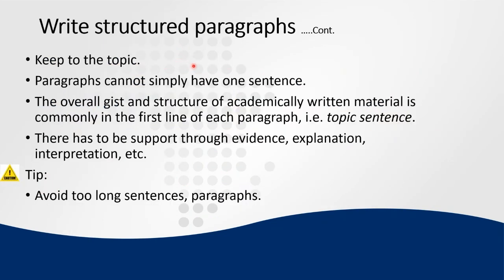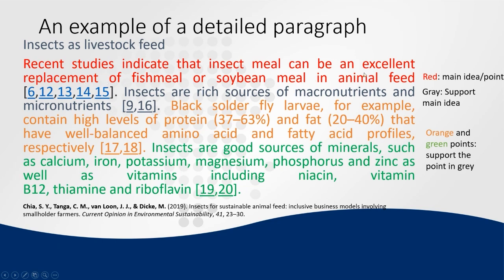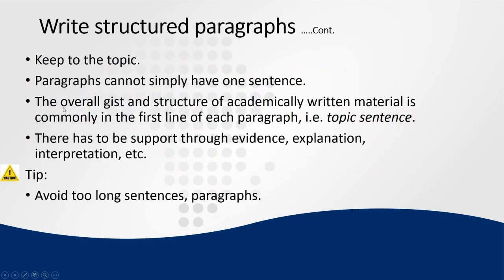This is a good way to illustrate how a well-structured paragraph should be. You have a topic sentence, you keep to the topic, and you avoid saying things beside it. Paragraphs cannot simply have one sentence — you need a couple of sentences to ensure the reader benefits from the topic sentence. You have a topic sentence, and then supporting information — you cannot have a topic sentence without any supporting details.